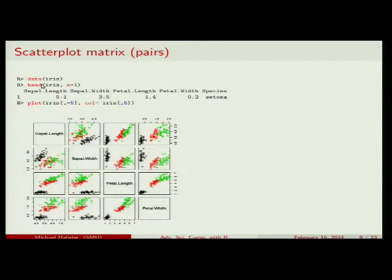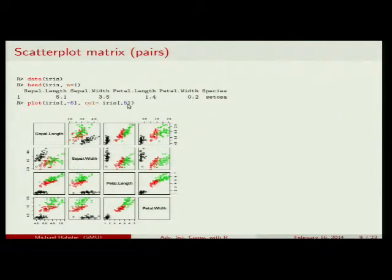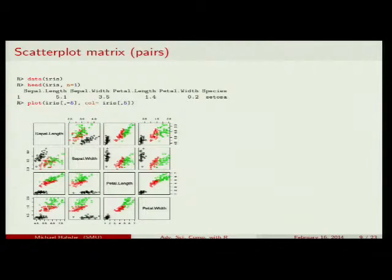If you have a data frame like iris and you say plot(iris), then you get the scatterplot matrix — we saw this before. In addition, I added the color parameter and used the name of the flower species as the argument. It will take this nominal variable, convert it into numbers, and then convert those numbers into colors. One is black, two is red, three is green, four is blue, five is yellow. Since we have only three species, it only uses the first three colors.